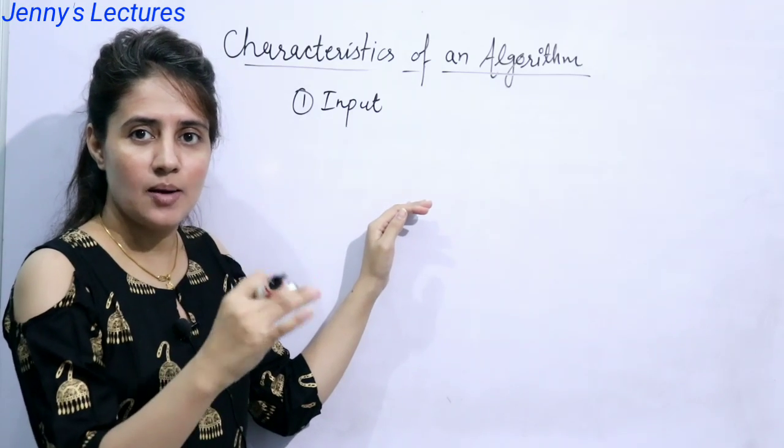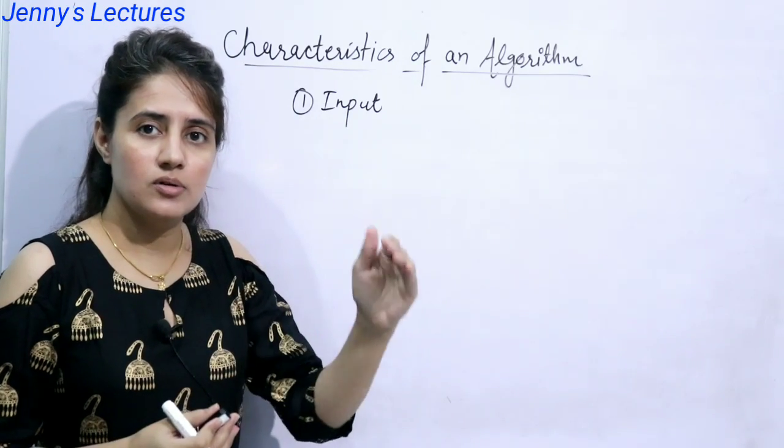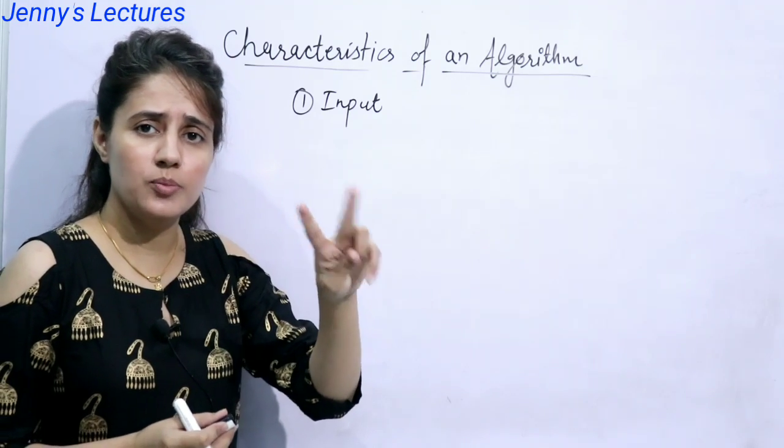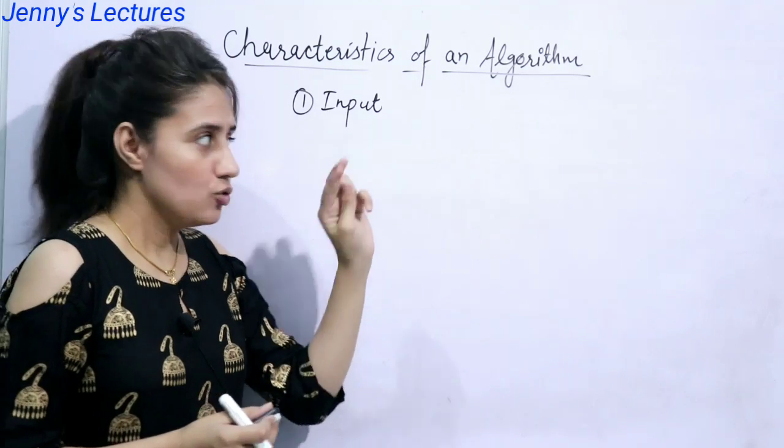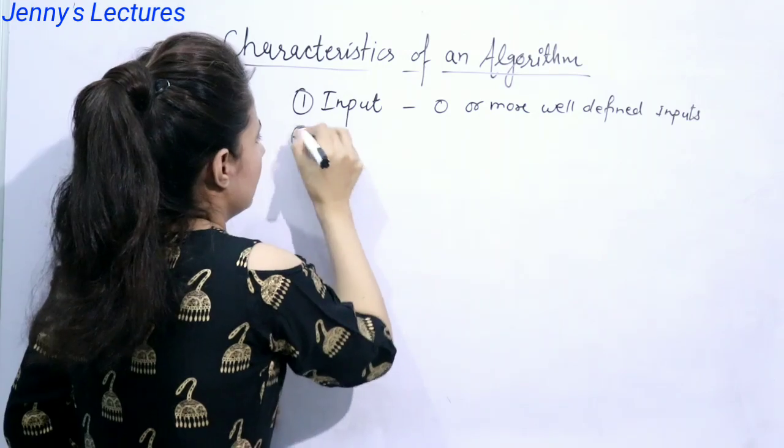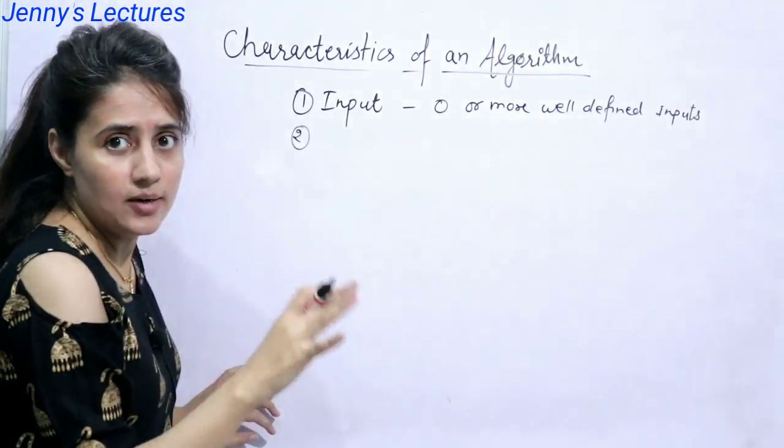And suppose let us take an example of you are writing an algorithm of sum of two numbers. In that case, input is two numbers, two inputs are there. So you can say algorithm can have either zero input or more inputs. Zero or more well defined inputs.